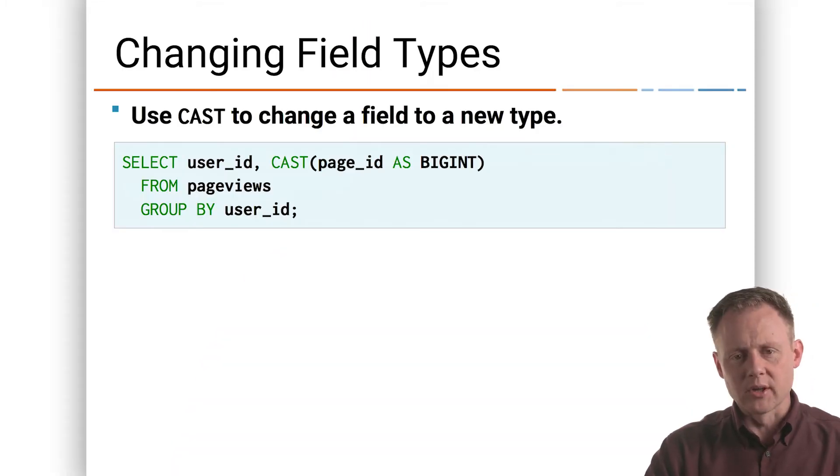Just to give you one example, though, of a built-in scalar function, here's cast. Now, imagine that page views has JSON data in it, and page ID is a string, because that's really, that's all it can be, right? Page ID is a string, that's fine.